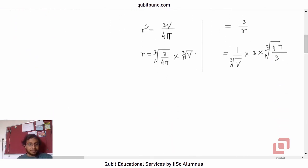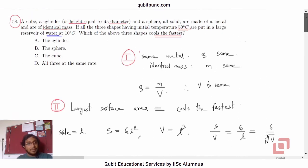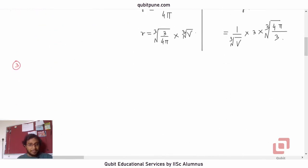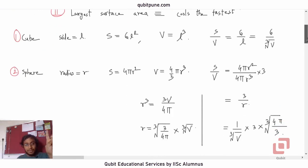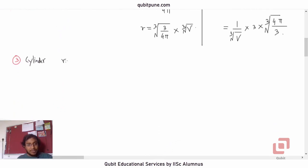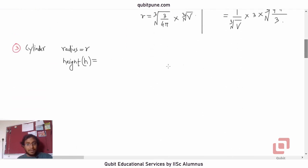Now for part 3 — the third solid is the cylinder. There is one important thing to consider: the height is equal to the diameter, not the radius. So if the radius is r, the height h will be 2r, because height equals diameter.